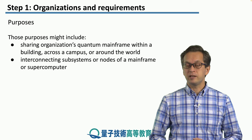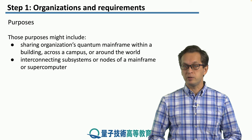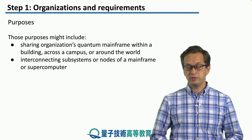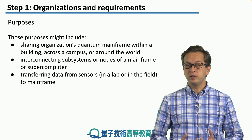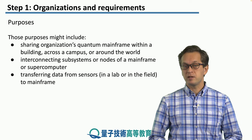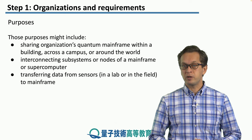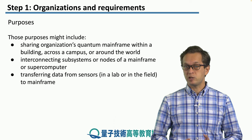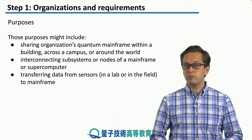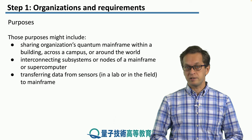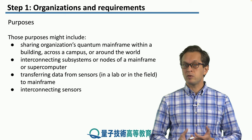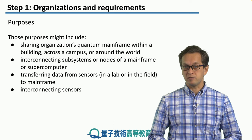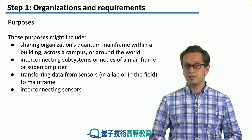Another purpose might be interconnecting subsystems or nodes of a mainframe over a computer — these types of networks are much smaller. Another purpose could be transferring data from sensors back to the mainframe, where sensors pick up weak signals and send data back for processing. We may also want to interconnect the sensors themselves.